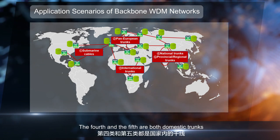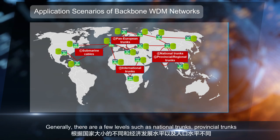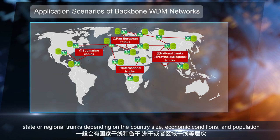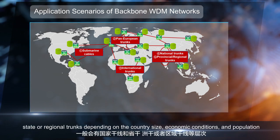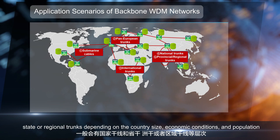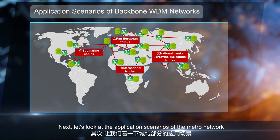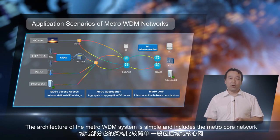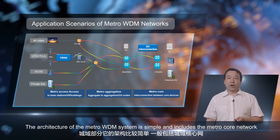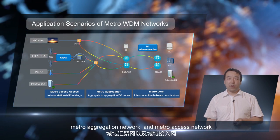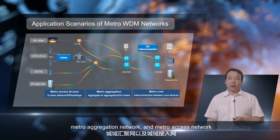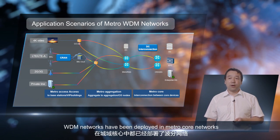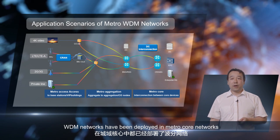The fourth and fifth are both domestic trunks. Generally, there are a few levels, such as national trunks, provincial trunks, or state and regional trunks, depending on the country size, economic conditions, and population. Next, let's look at the application scenarios of the metro network. The architecture of the Metro WDM system is simple and includes the MetroCore network, MetroAggregation network, and MetroAccess network. In almost all developed and developing countries, WDM networks have been deployed in MetroCore networks.